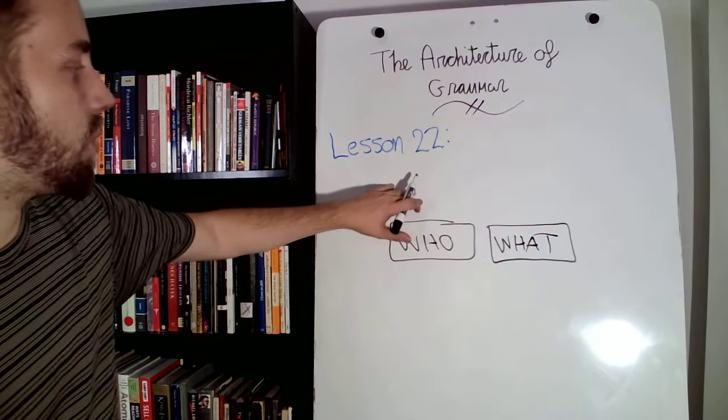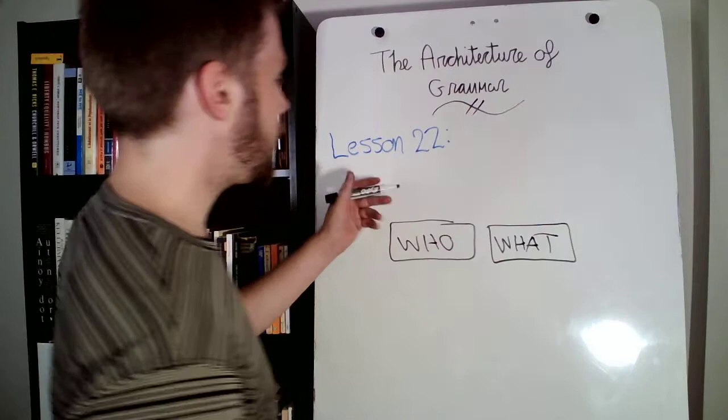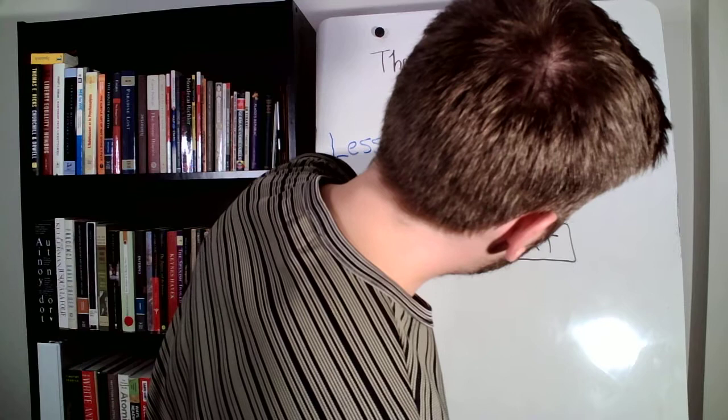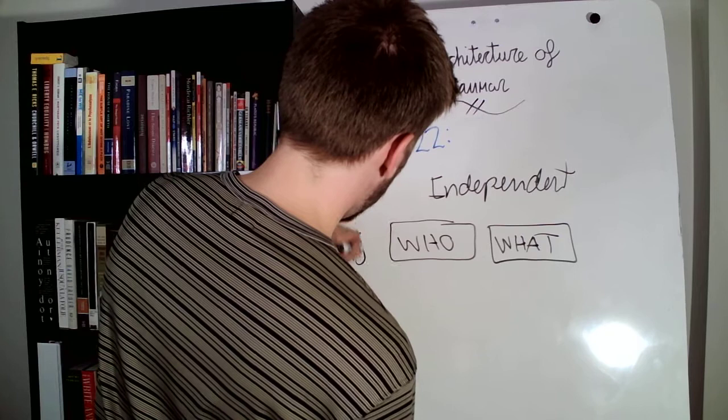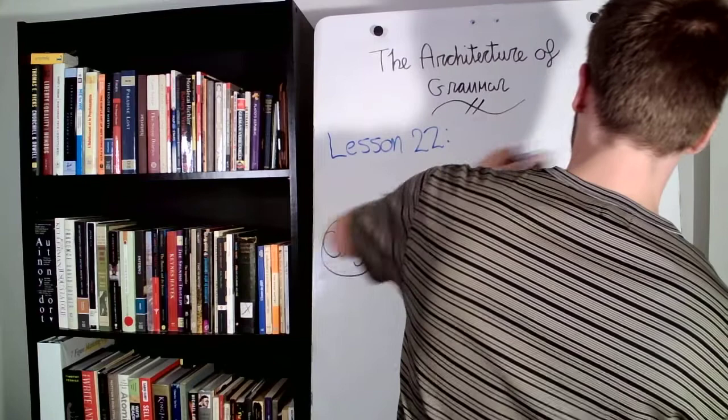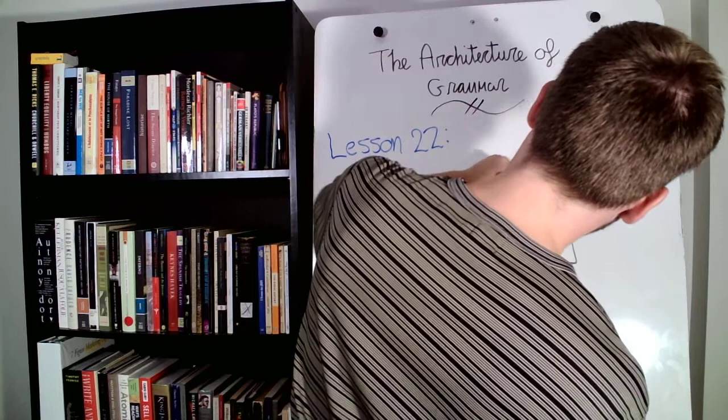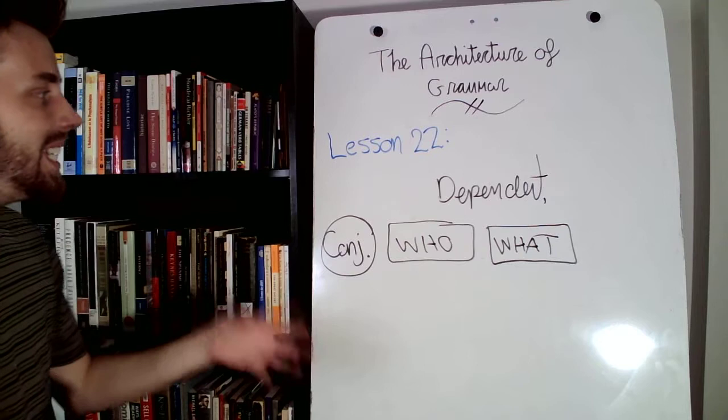So again, in any sentence, we have a who and a what. Like we've mentioned before, what makes a dependent or independent is whether there is a conjunction before. So what we're looking at right now is an independent clause. But if I put a conjunction, that becomes a dependent clause.